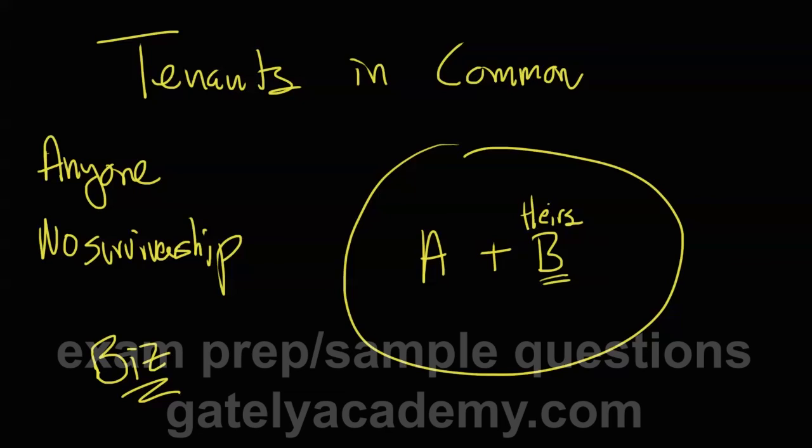Think about it. If you owned an auto-body shop with some business partner of yours, you might like your business partner and you might be really good friends. But if you got hit by a bus, would you want the share of the auto-body shop to go to your business partner or to your family? Probably your family, I hope. And so that's how tenants in common works.